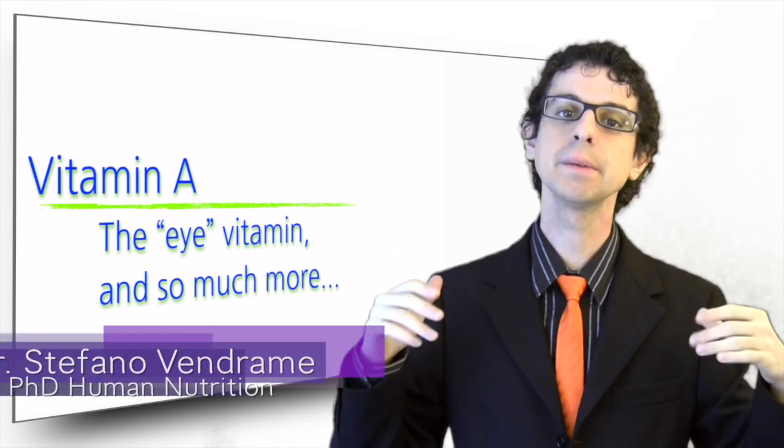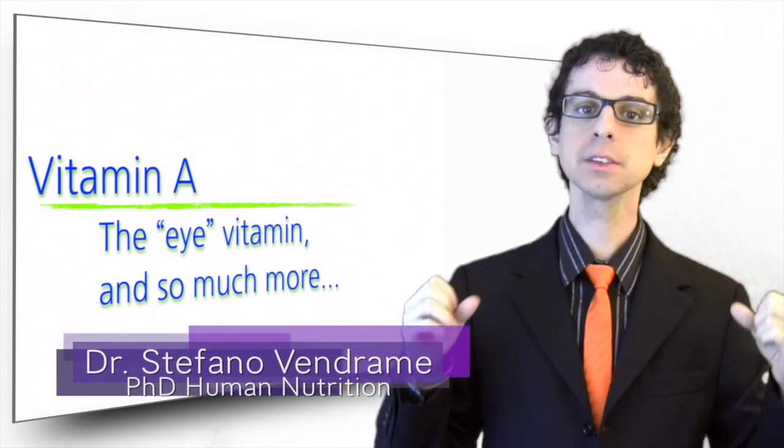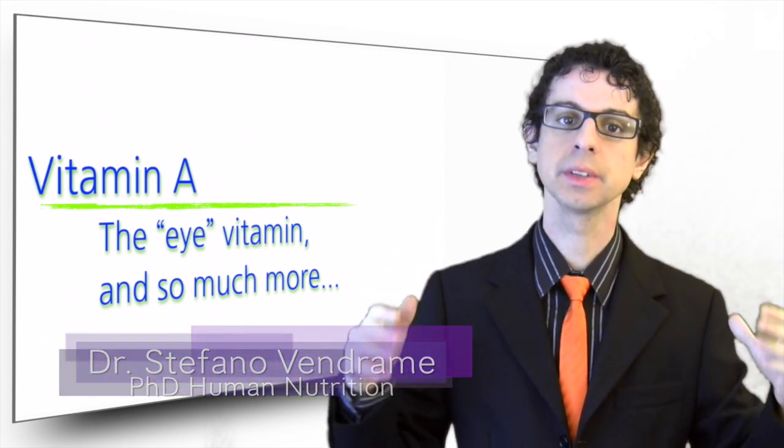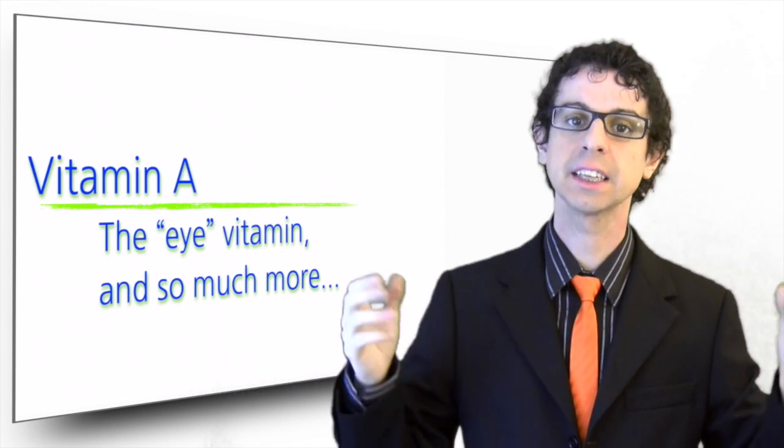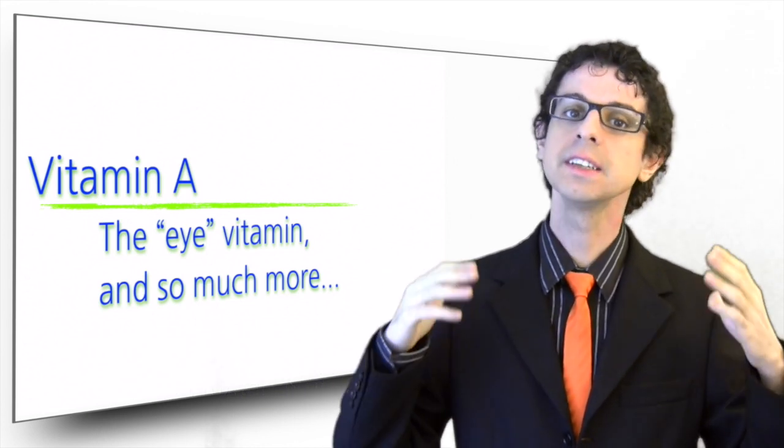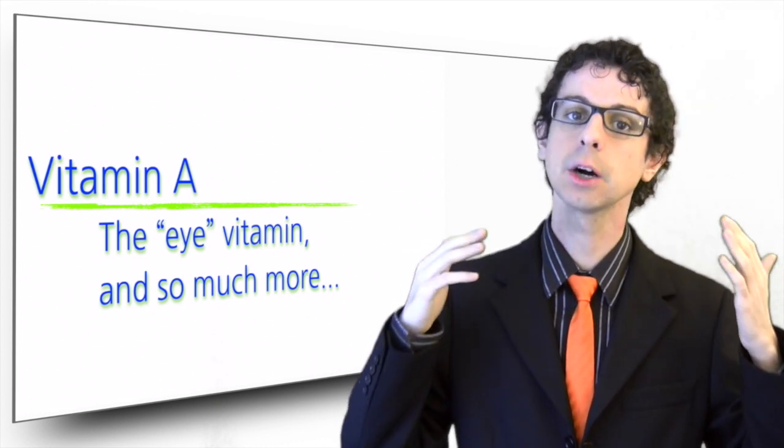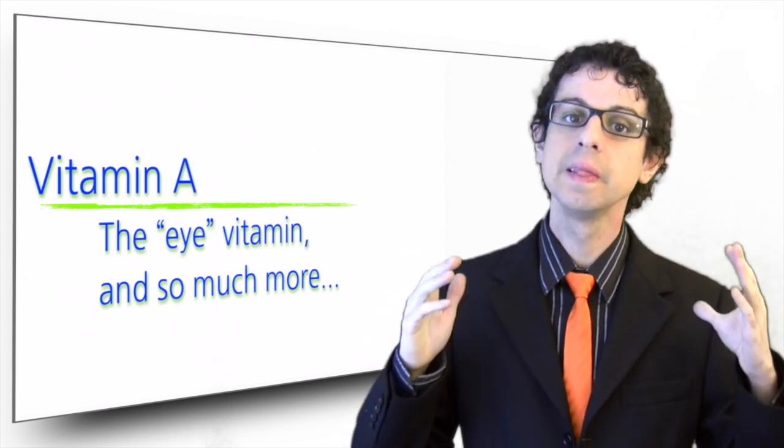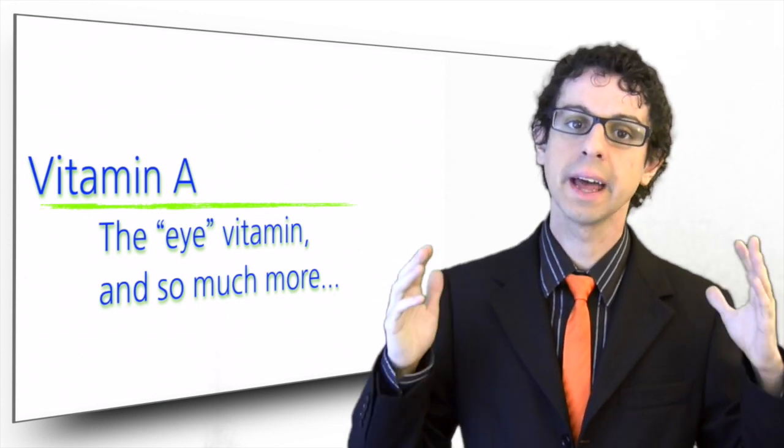Most people know that vitamin A is good for your eyes. Already thousands of years ago, in ancient Egypt, physicians used to prescribe raw liver to treat night blindness. Of course, they didn't know about the existence of vitamin A, but they had indirectly observed its effects. Liver, we know today, is one of the richest food sources of vitamin A.